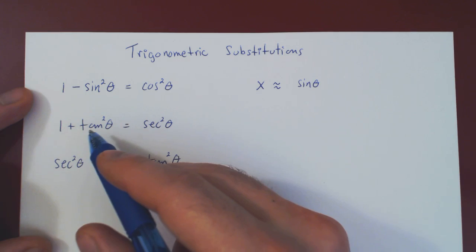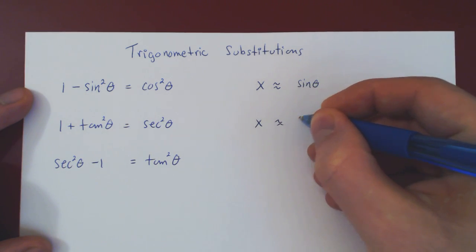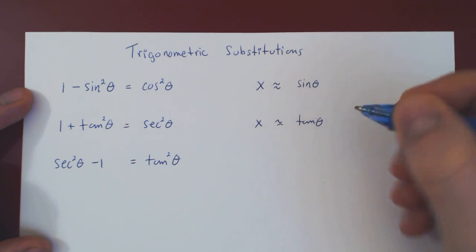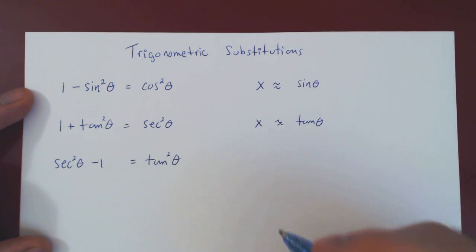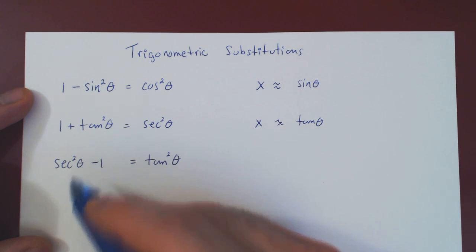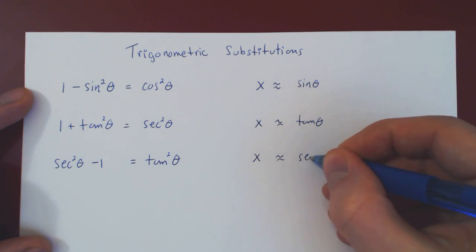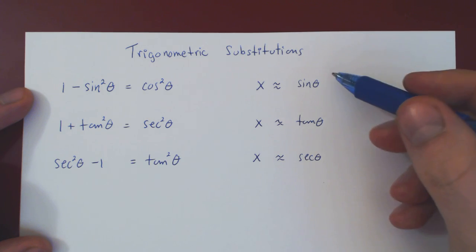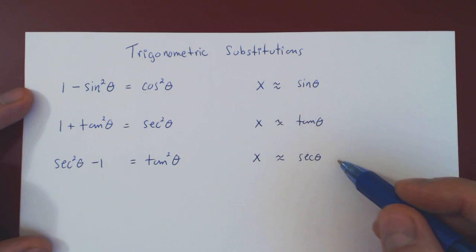Here, well, we would let x be tangent of theta. And again, I will write approximately, as once again, we could have a constant multiple of theta, of tangent of theta, sorry, and also adding a constant term. And here, we'll let x be secant of theta, and again, approximately, as we could possibly have a constant multiple plus another constant.